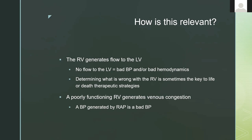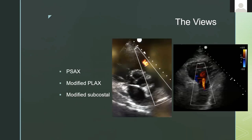An RV that's not working well is going to cause venous congestion and high CVP, and blood pressure generated by a high CVP is a bad blood pressure. You've heard about Vexus, et cetera — this ties into that.